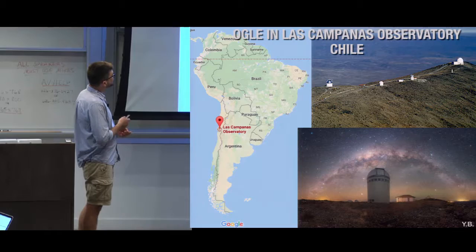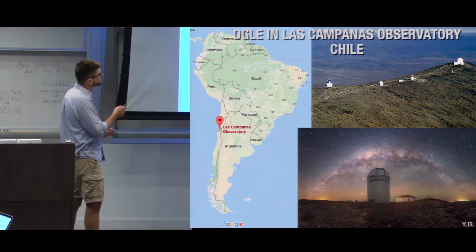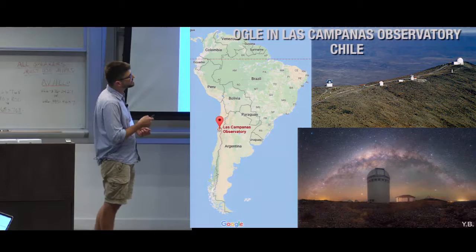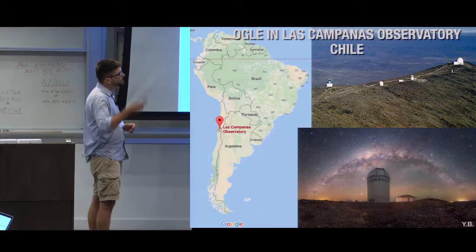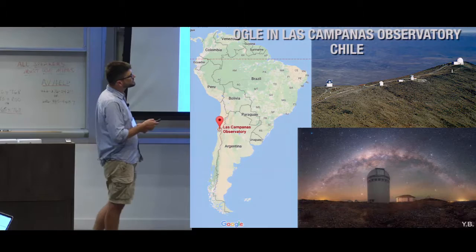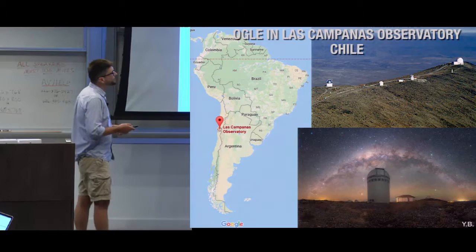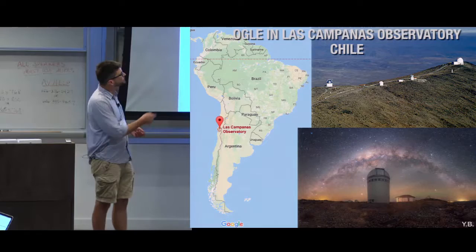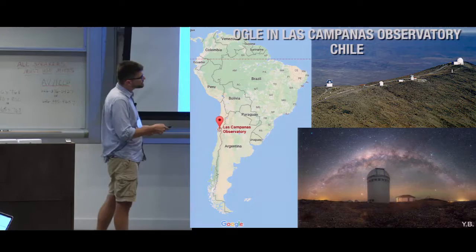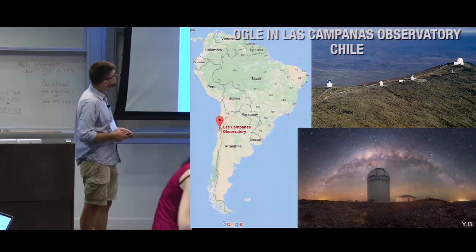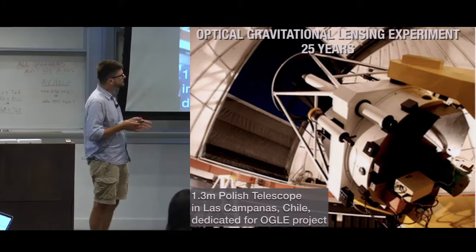So what is OGLE? It was mentioned a couple of times already during this workshop. This is South America. This is Chile. Somewhere in the middle of Chile, there is a nice desert and there is Las Campanas Observatory. This is part of this Las Campanas Observatory, a private observatory run by Carnegie. In this observatory, there is this telescope which belongs to Warsaw University. The telescope itself was built in 1996, but the OGLE project started in 1992.